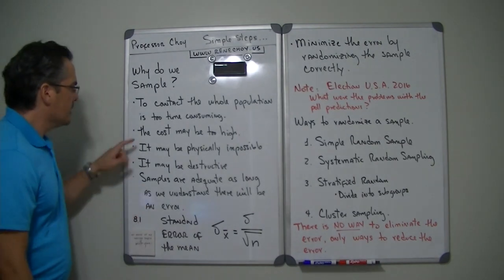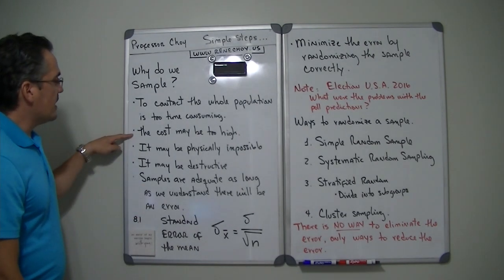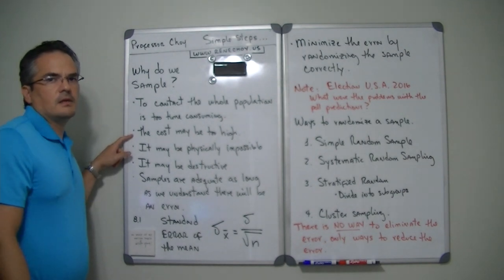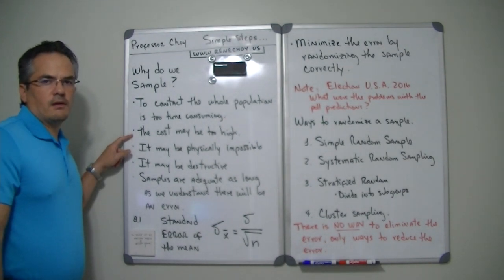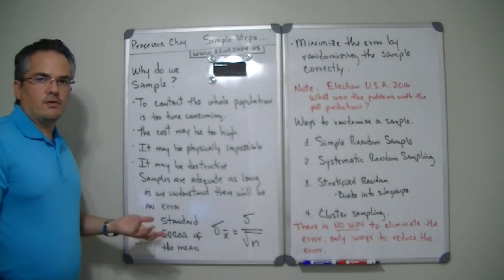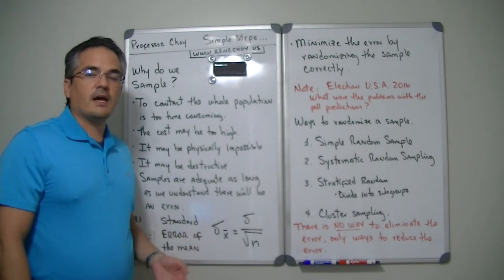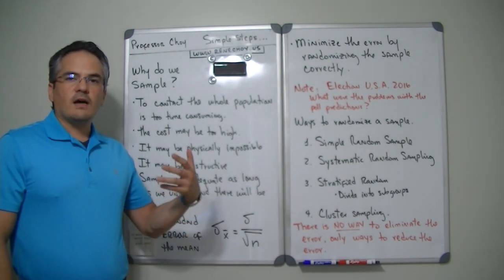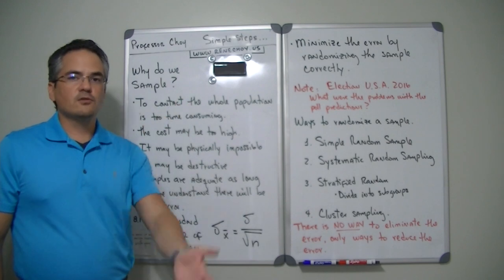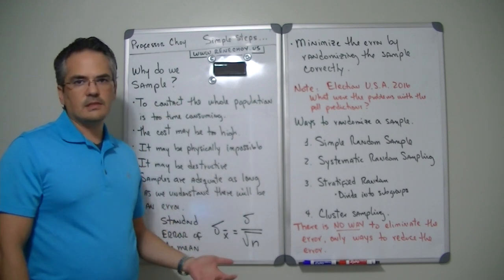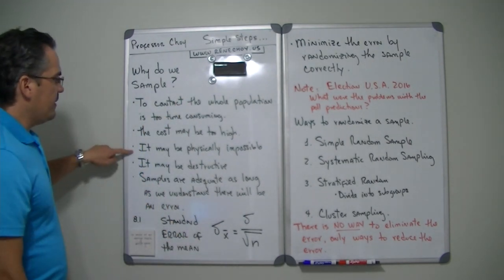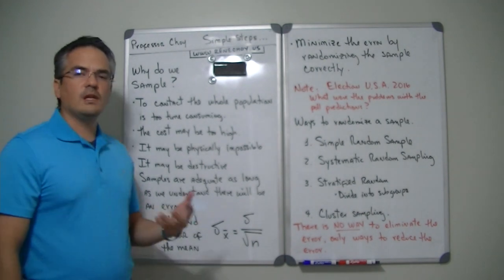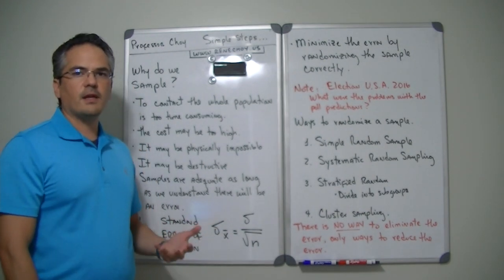Another reason why we sample instead of collecting the entire population is it may actually cost too much money. In order to sample everybody, there has to be somebody calling people. There may also have to be something mailed to you. It may also be physically impossible — it might be really difficult to reach absolutely everybody.